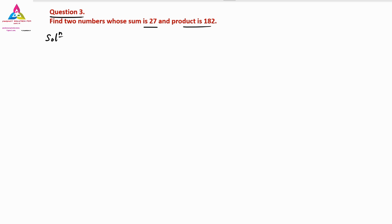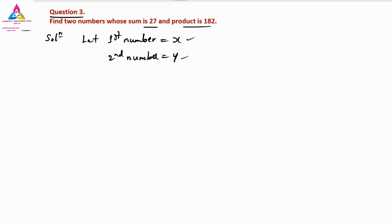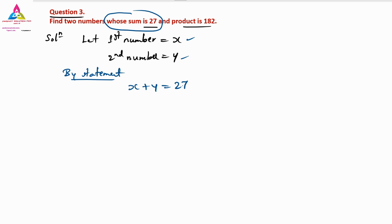For the solution, we don't know the two numbers. Let the first number be X and the second number be Y. This is a quadratic equation — quadratic means only one variable, linear means two variables, that is the only difference. We need to eliminate X or Y. By the first statement, the sum of the two numbers: X plus Y equals 27.